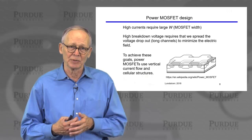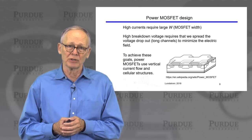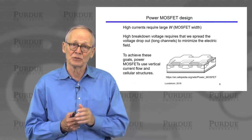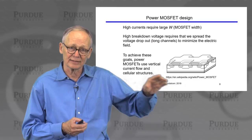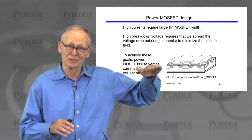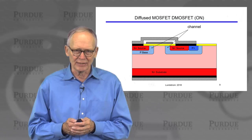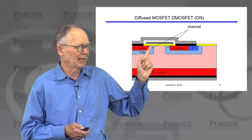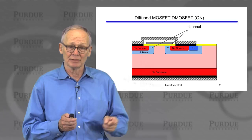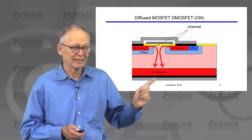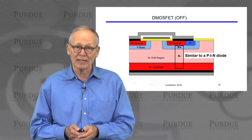To achieve these goals, power MOSFETs have a cellular structure that wraps a lot of width into a small area, and the current flows vertically through the wafer where we can get a long distance to spread out the electric fields. This plot is not to scale — the vertical distance is much longer than the lateral distance. This is a diffused MOSFET or D-MOSFET, one flavor of power MOSFET. We have two parallel sources on the top, a P-type channel that can be turned on with the gate, and the drain is at the bottom. When we apply a gate voltage and turn on the channel, the current flows across the gate and then down and out the drain — so the current flow is vertical.